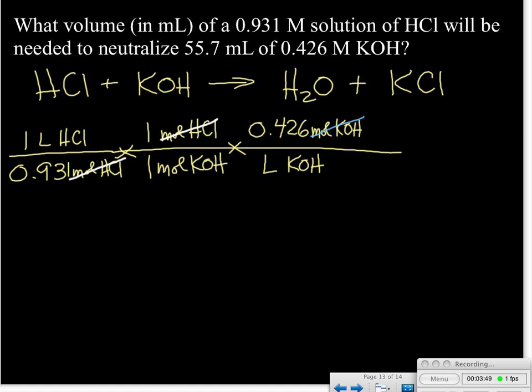That clears out the moles of KOH term. Now if we stopped and calculated, we'd have the ratio of the liters of the hydrochloric acid to the liters of the potassium hydroxide.